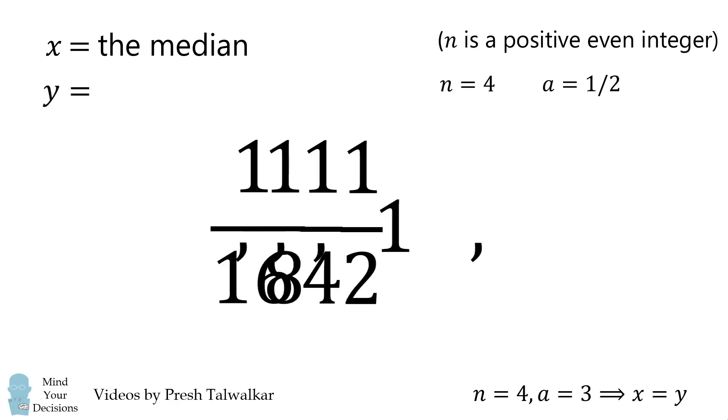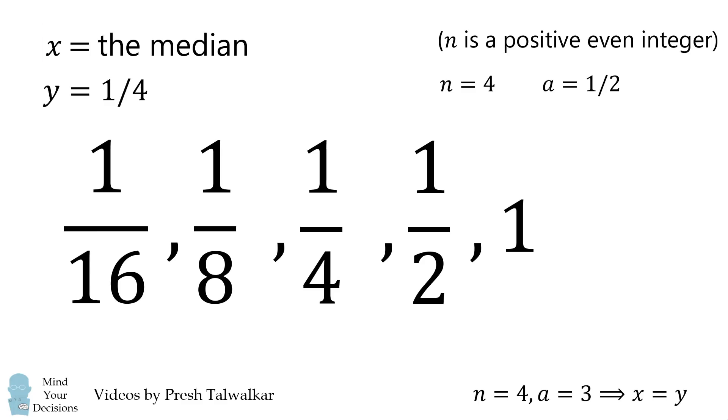To calculate the median, we'll put it in ascending order. Here, we have the median is exactly equal to the middle value, which is 1 over 4, and that's exactly equal to y. Therefore, again, x is equal to y.